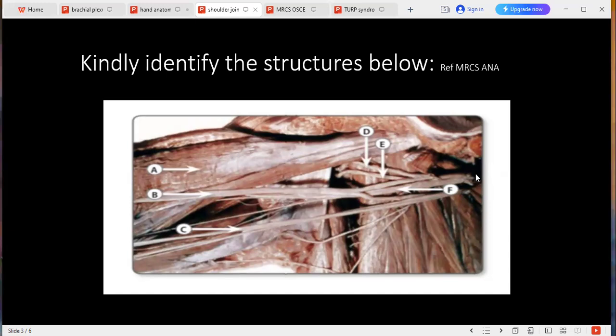What trunks can you identify? Because here there are certain labellings. If you can kindly tell me what label A, B, C, D, E, and F are to begin with. Okay, yes. F is the middle trunk, and B is the median terminal branch, and this is the musculocutaneous branch.